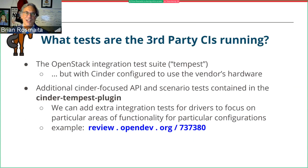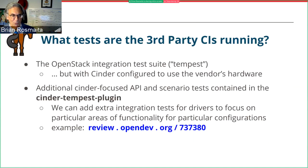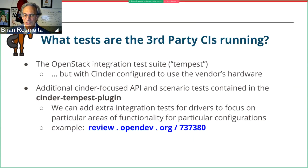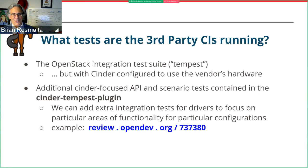What tests are the third-party CIs running? The OpenStack integration test suite is called Tempest, but configured to use the vendor's hardware instead of test backends. We also run additional Cinder-focused API and scenario tests contained in the Cinder-Tempest plugin. That allows us to add extra integration tests for drivers that focus on particular areas of functionality or regressions we've seen for particular configurations. If you want to see what one of those looks like, you can check out review 737-380 on review.opendev.org — it's an example of a patch to the Cinder-Tempest plugin that adds extra testing.